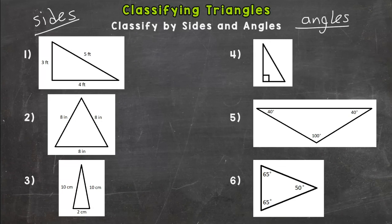For number one, whenever you're looking at a triangle and classifying it by its sides, you need to take a look at how many of the sides are congruent, and congruent just means how many of the sides are the same. For number one we have three feet, four feet, and five feet. Are any of those the same? No.